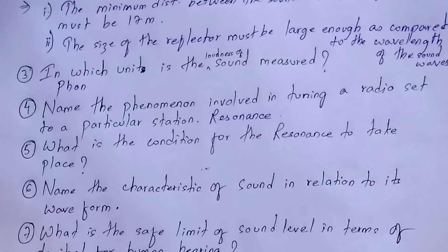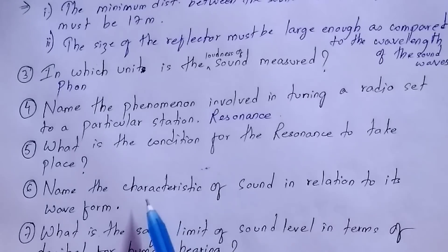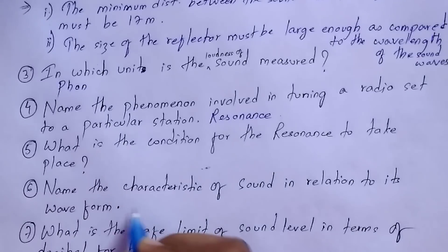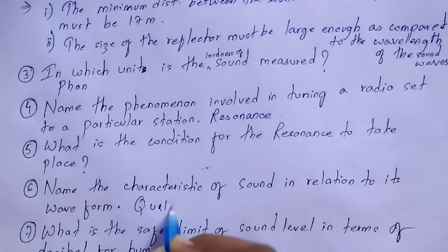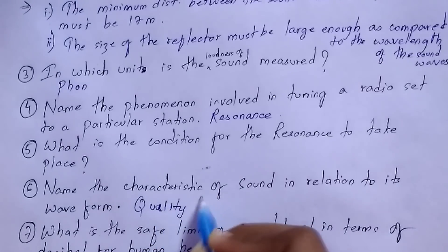If you want the PDF of this, you will find it in the description box and can download it. Question number six: what is the characteristic of sound in relation to its wave form? The answer is quality, and you must remember that quality is also called timbre.